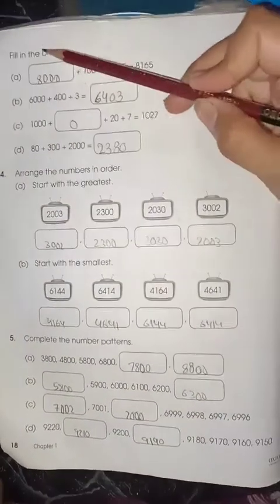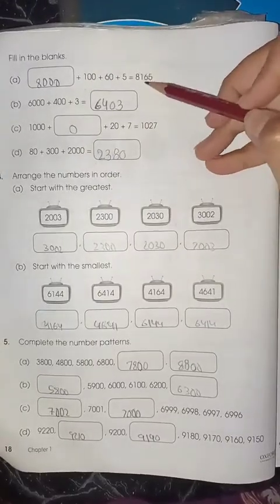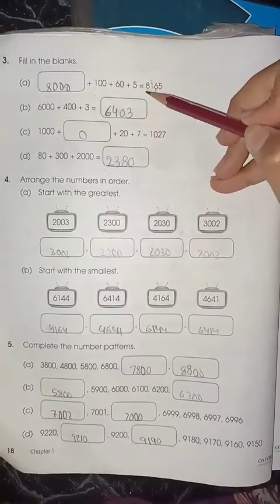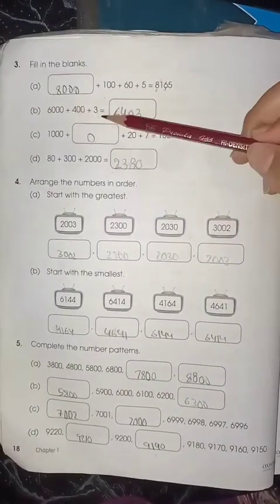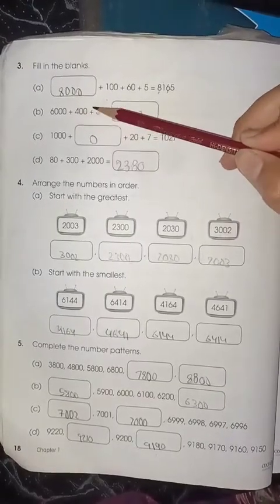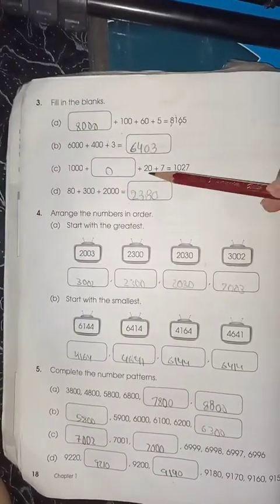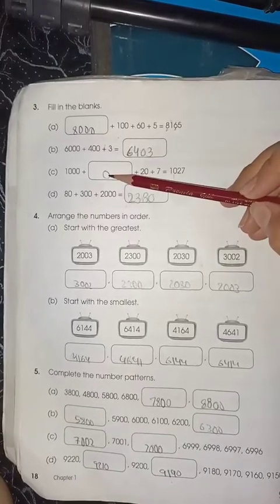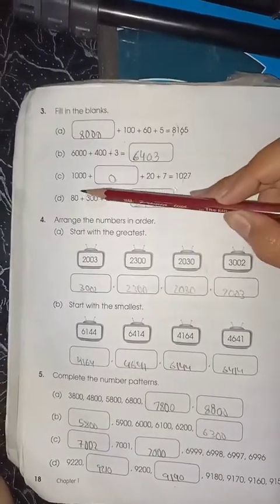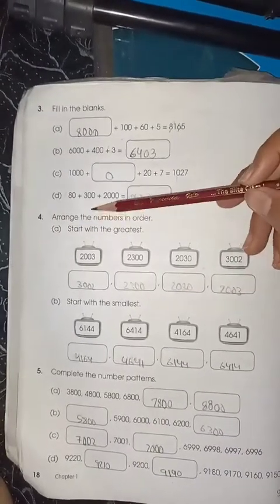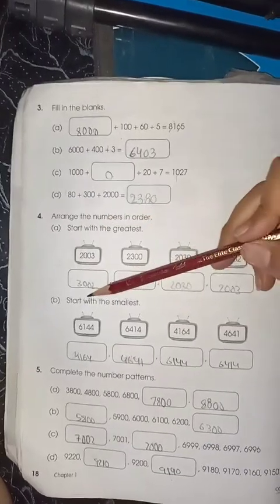Move on to the last page of today's working, page number 18. Last page of chapter number 1. Again, you have to fill in the blanks. Here you can see 5, 60 because it is in the tens column, and it is in the hundreds column, 100, and it is 1000, so 8000. 643 becomes 6403 because tens is missing, so we are going to write 0.